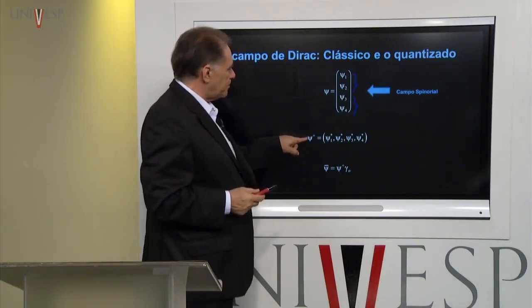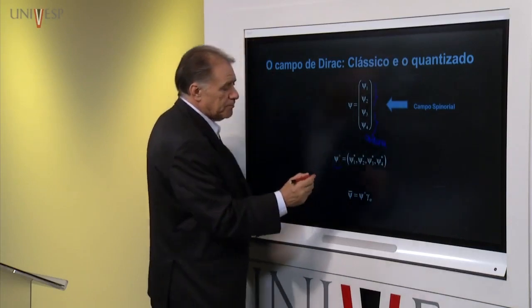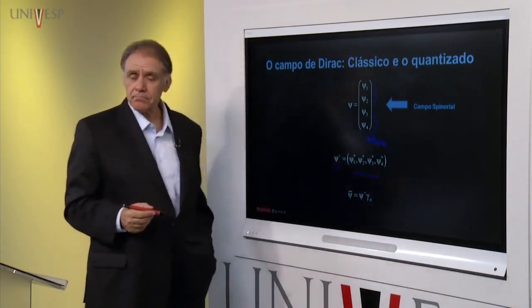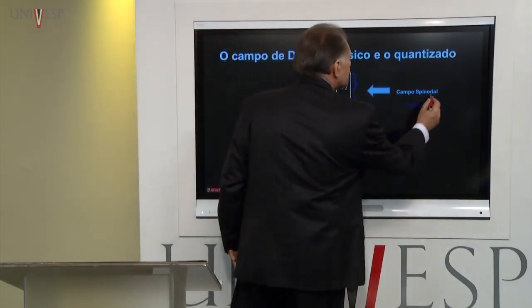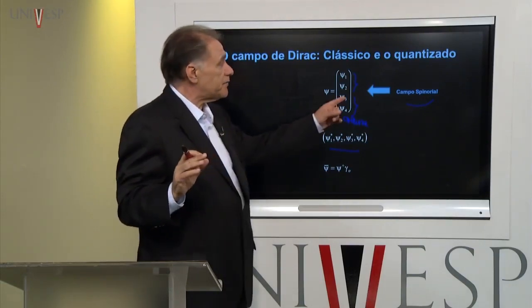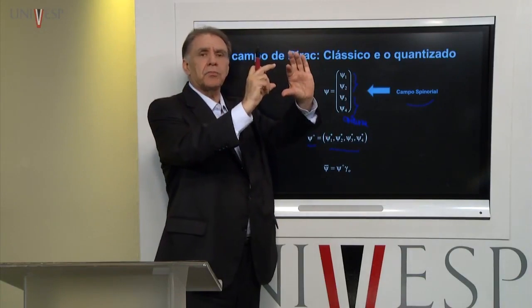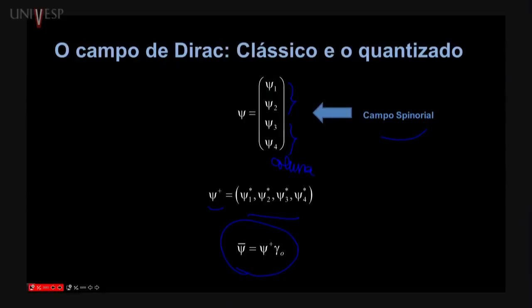Introduz-se também o Psi com sinal positivo, que é o transposto conjugado. De forma que, se esse campo aqui é coluna, esse transposto conjugado é linha. É uma matriz coluna e uma matriz linha. Esse campo tem esse nome: campo espinorial. É um objeto diferente de tudo que a gente conhece. Em vez de duas componentes, quatro componentes. E também se trabalha muito com o campo conhecido como Psi-barra, que é Psi-cruz vezes uma matriz gamma-zero, que explicarei depois.